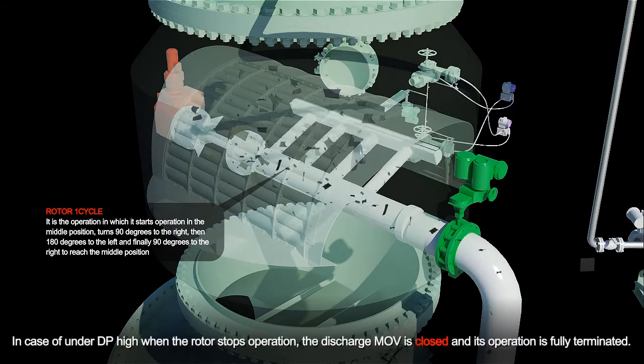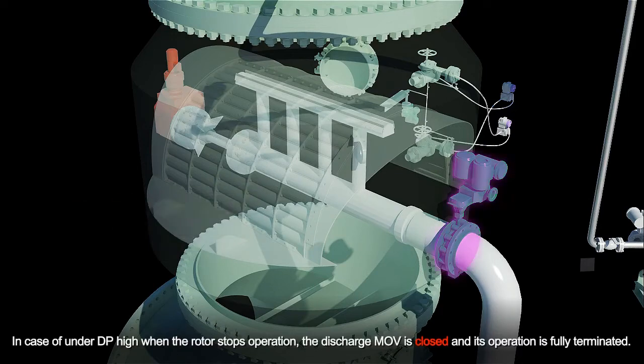In case of under DP-high when the rotor stops operation, the discharge MOV is closed and its operation is fully terminated.